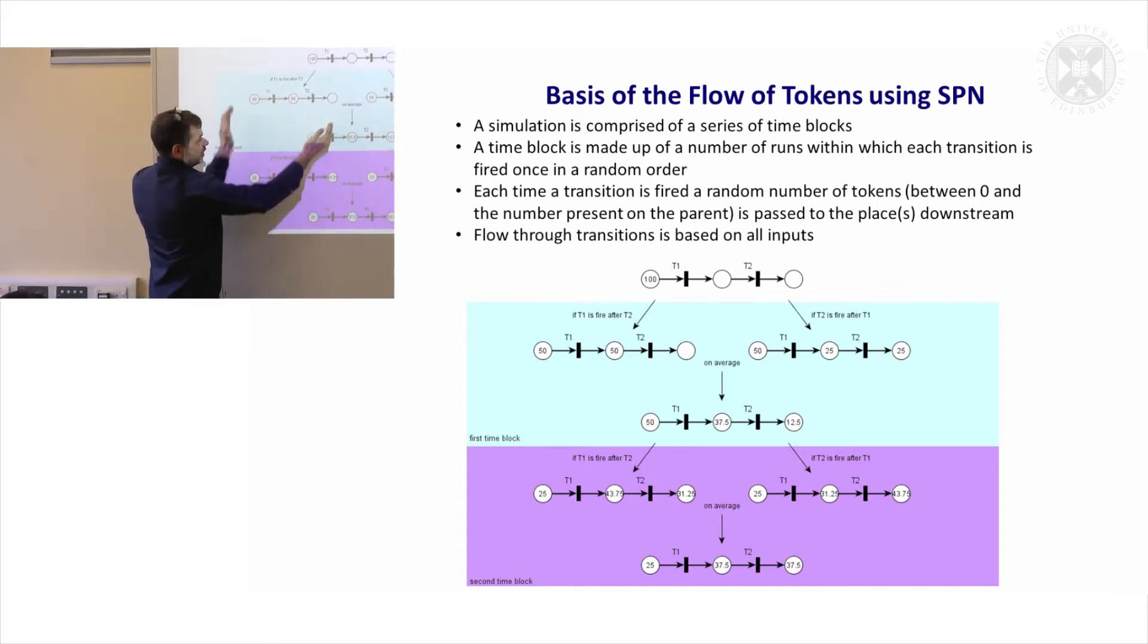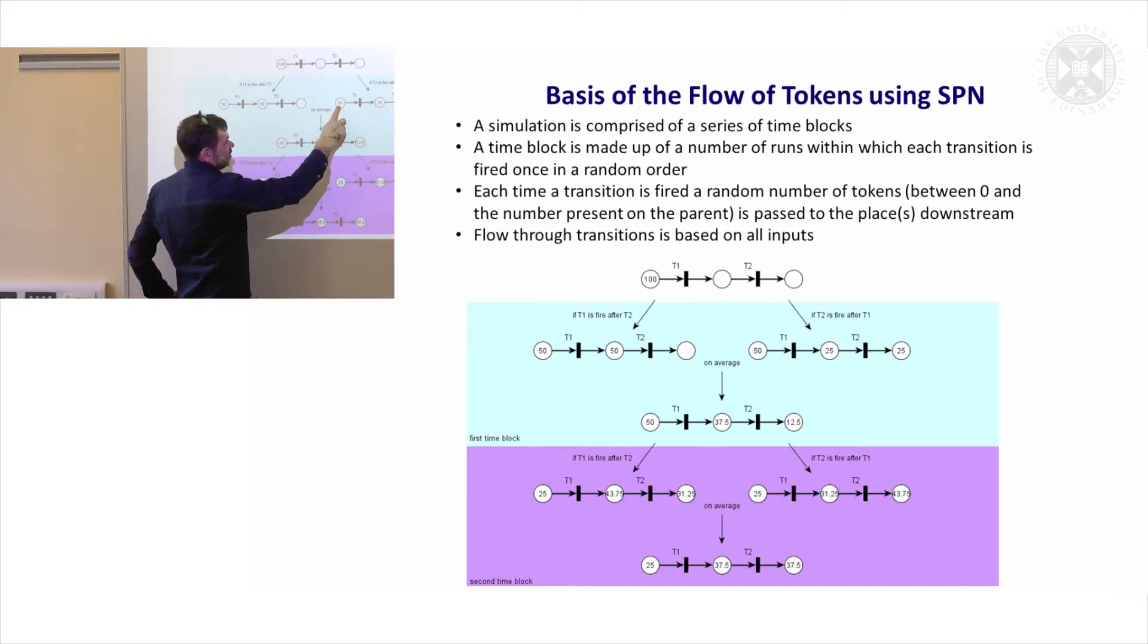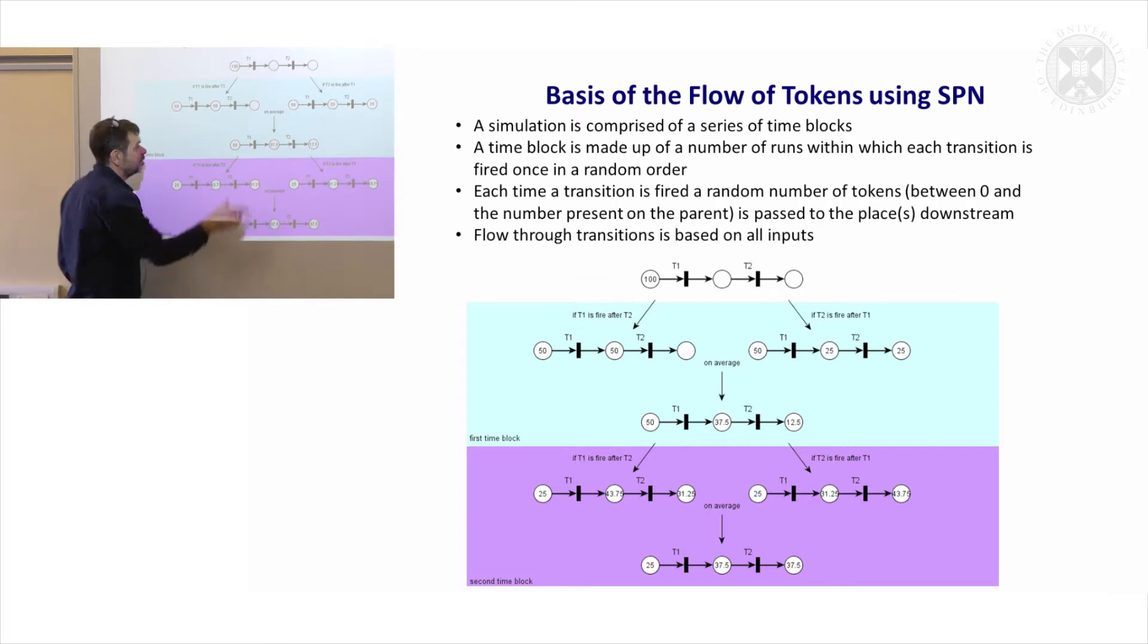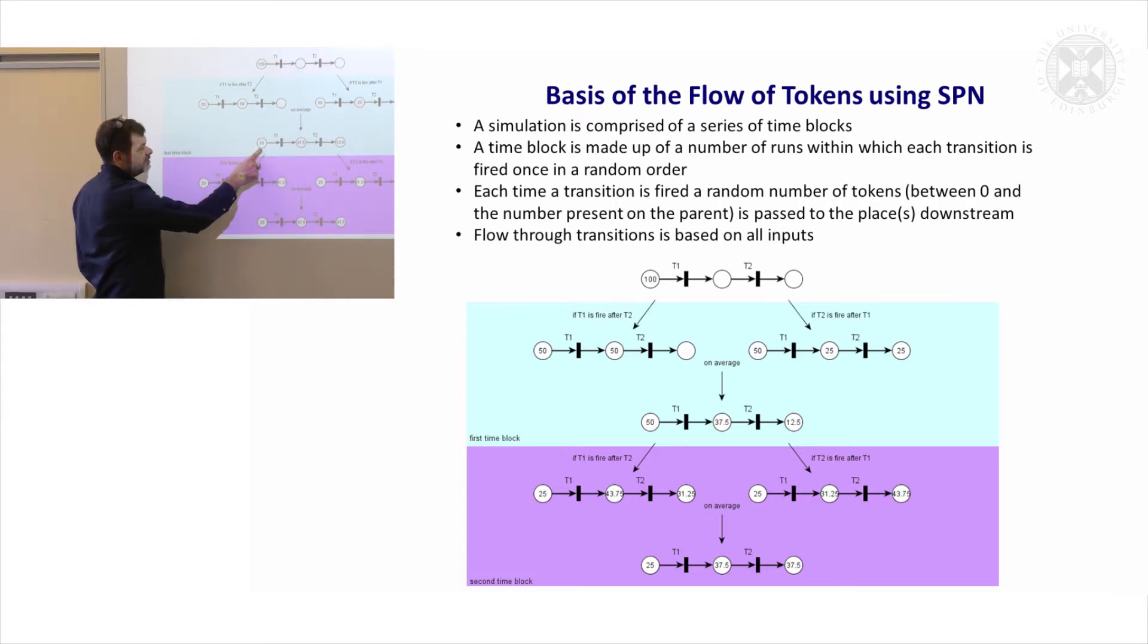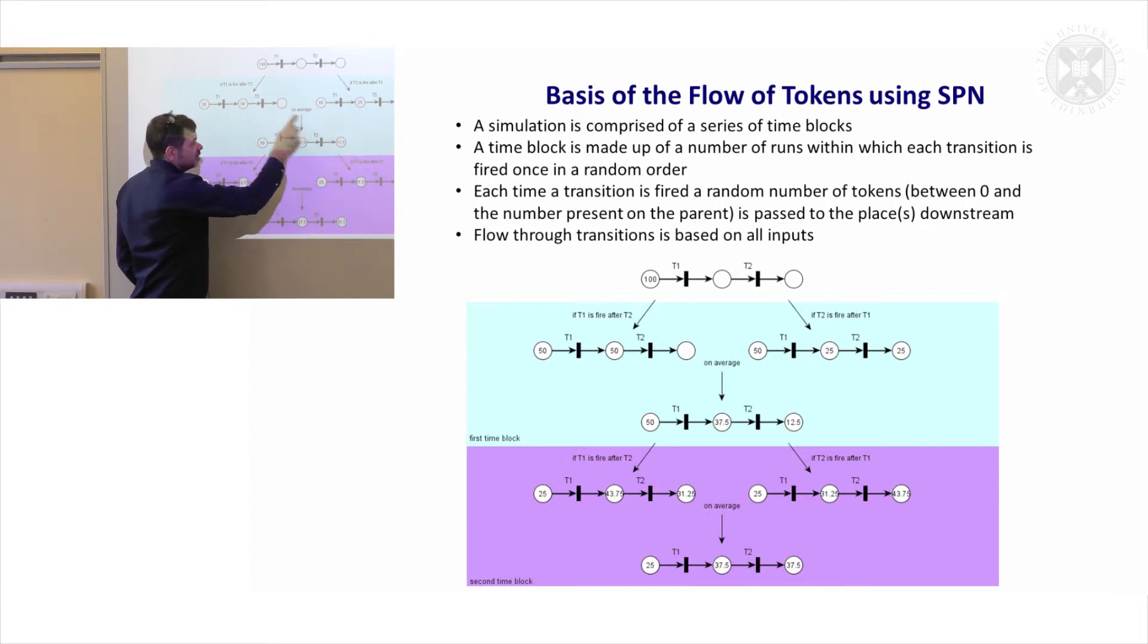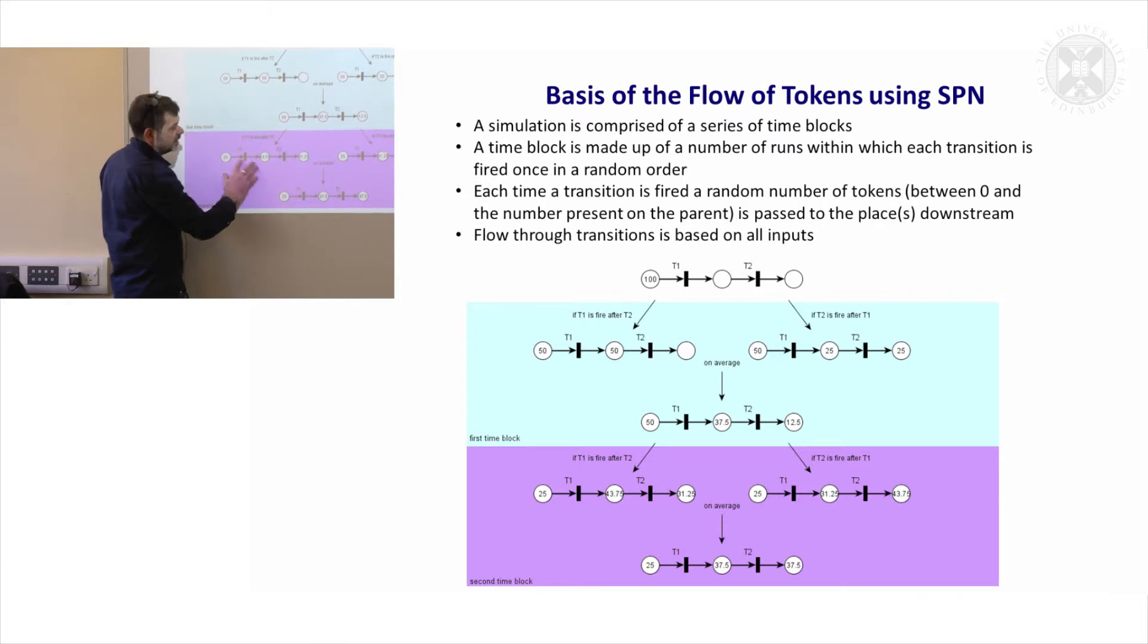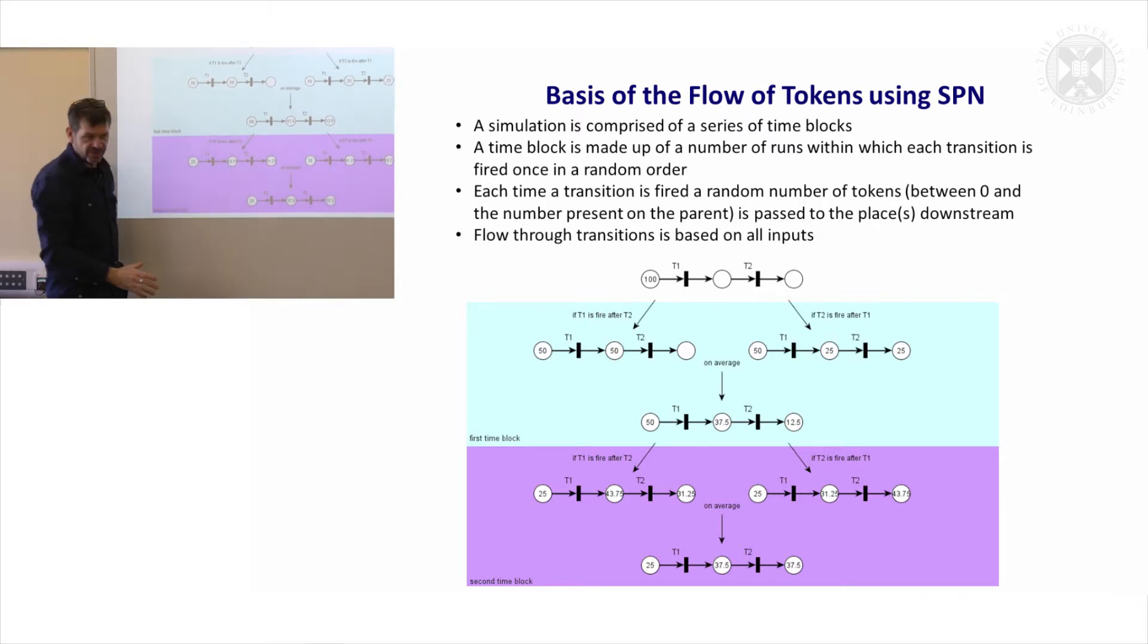The second scenario is that T1 fires first, on average 50 tokens move over, T2 then fires, there are 50 tokens here, and it's going to move there. But both of these possibilities are equally likely, and actually what you would then get is a distribution, which is a summary of those two answers. That we'd have 37 and 12. So that's one firing, and we repeat this process again, and again you get a distribution of tokens through the system.